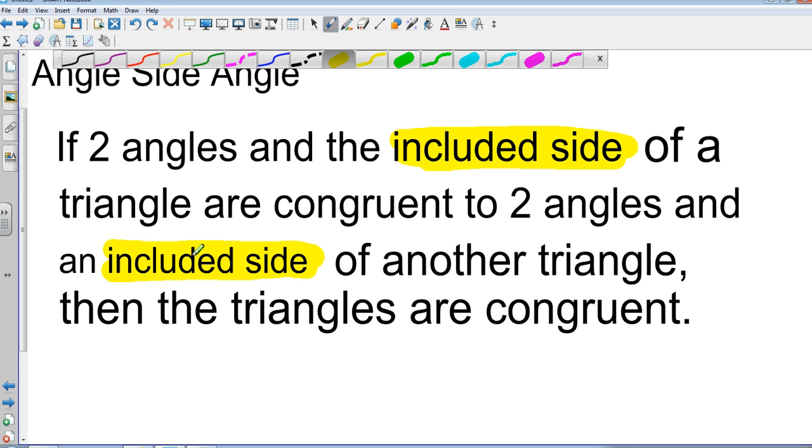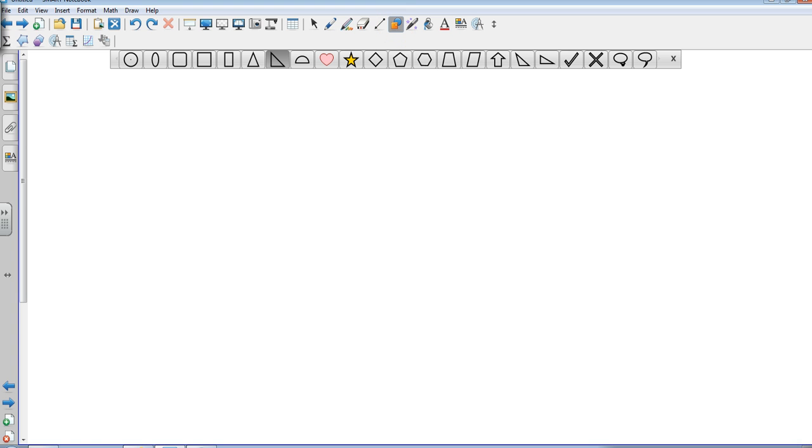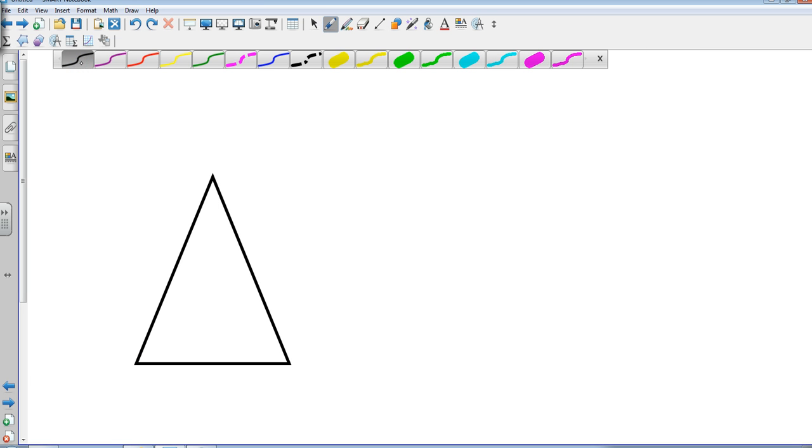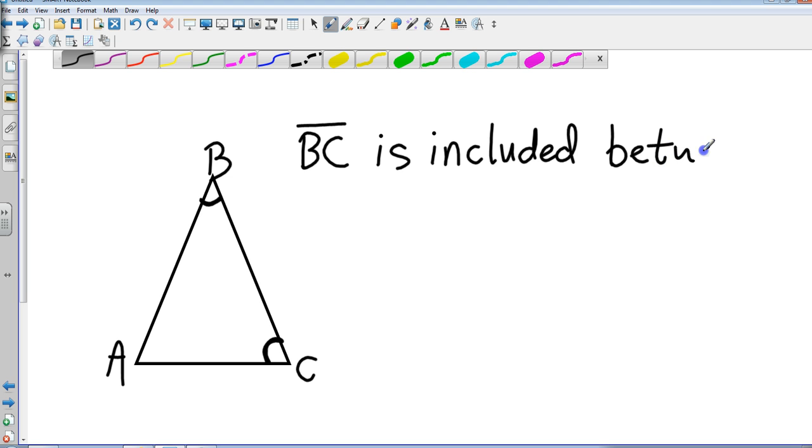Let's look at an example of what an included side would be. If I took a triangle, just a basic triangle like this, if I had ABC, so I need two angles. Let's say this angle is congruent to that angle. So what is the side that's included between those two angles? In this case, BC is included between angle B and angle C. Again, that side is included between those two.